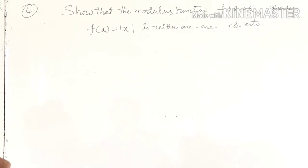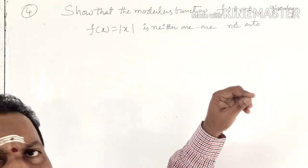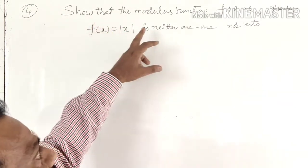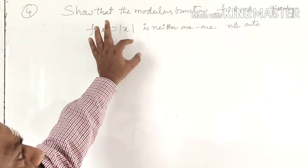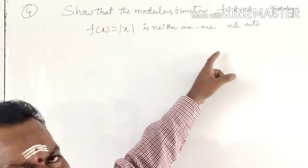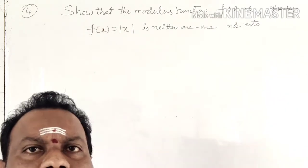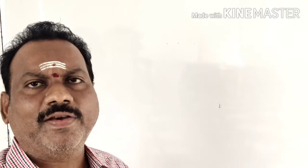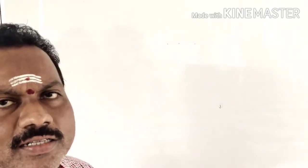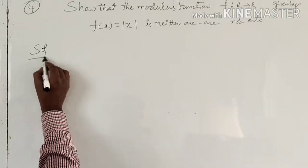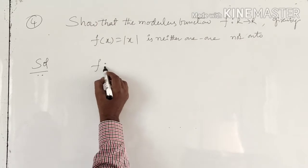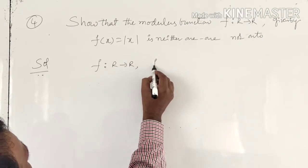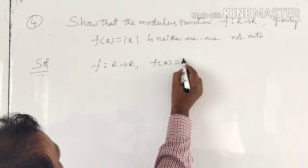Next question, fourth problem — it is very important. Show that the modulus function f mapping from R to R, given by f(x) = |x|, is neither one-one nor onto. We will check the modulus function; previously we checked the greatest integer function, now we will see the modulus function.